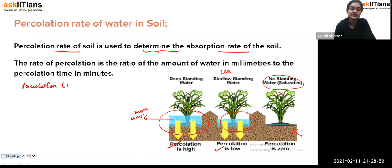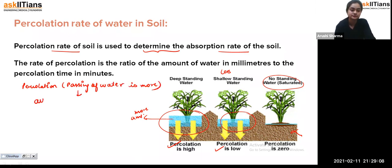High percolation means more passing of water, which means more absorption of water by the soil.